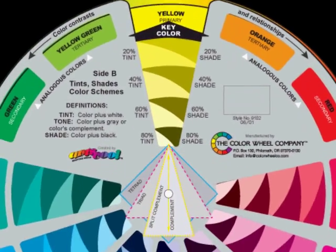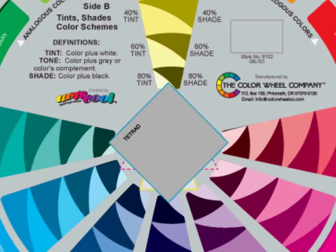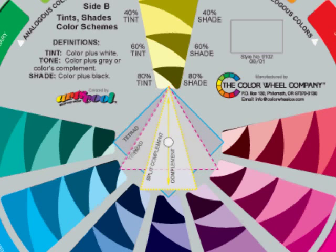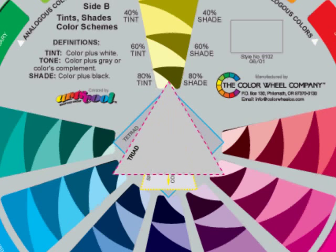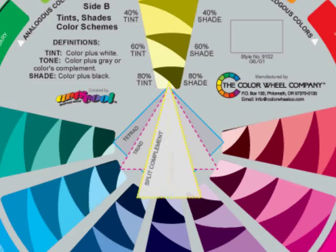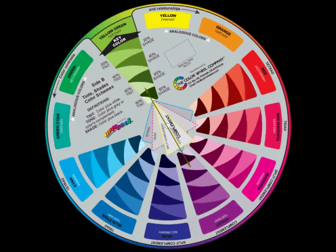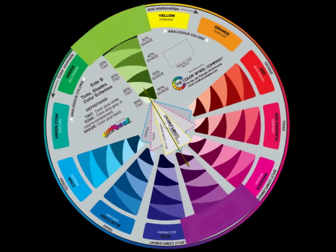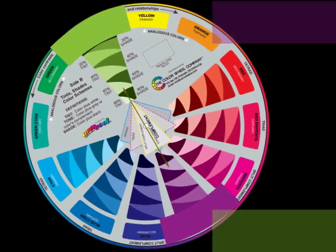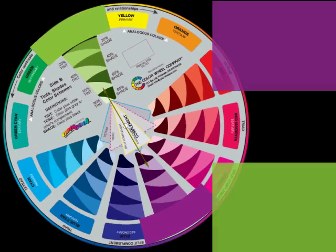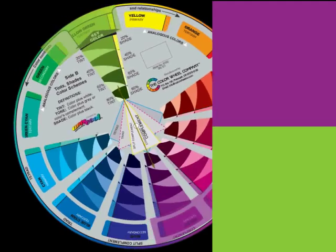The geometric shapes in the center of the wheel are tetrads — four points — triad — three points — split complement, and complement, which is opposite. The complement is the opposite of the key color. These colors highly contrast each other and vibrate when placed side by side.